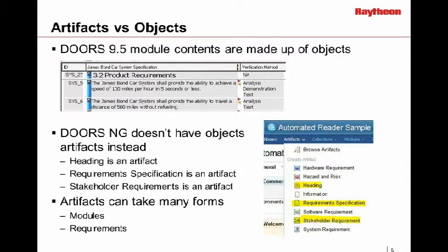A text artifact type could be your software requirements. There's also a module artifact type, so that could be your system requirement module. A module is an artifact, and you can define what would be analogous to objects. Instead of just having an object and using attributes to characterize it like you would in DOORS 9, in DOORS Next Generation you could literally define an artifact to say this artifact is a software requirement, whereas this artifact is a stakeholder requirement. There are little symbols you can choose, so you can quickly distinguish what type of artifact it is.